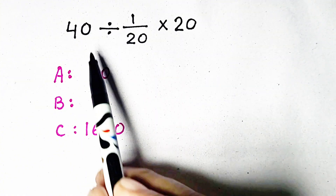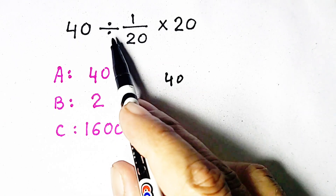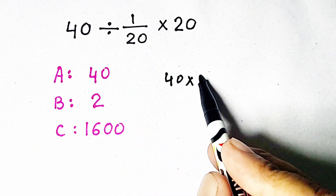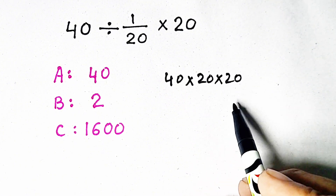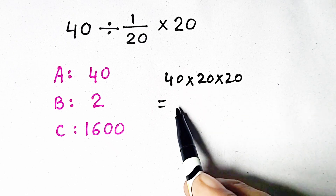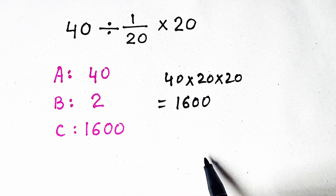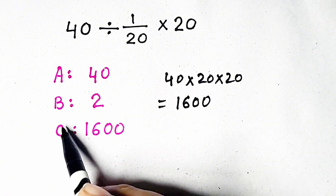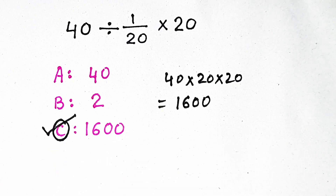So it will be 40. Division is converted into multiplication and 1/20 is flipped times 20. So if we multiply these three numbers, we will get 1600, which will be our correct answer. Option C is correct.